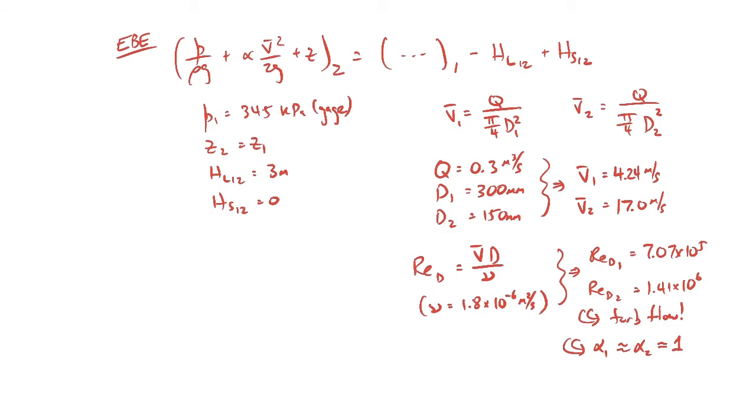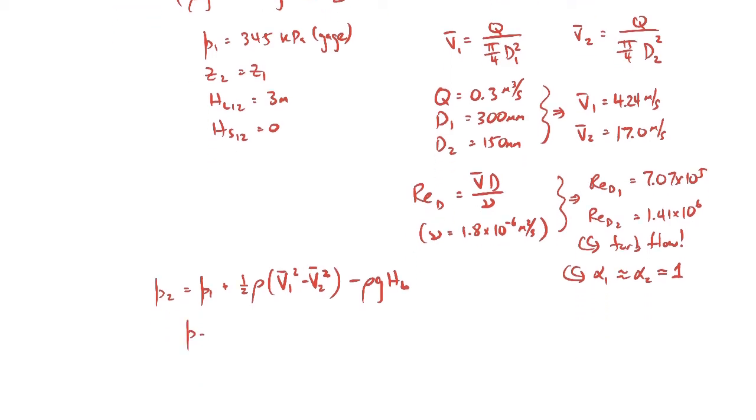So p2 would be p1 plus one-half rho v1 squared minus v2 squared. I use the assumption or the fact that the kinetic energy correction factors are equal to 1, so that's why you don't see the alphas here. And then we have also the head loss term, so we know all the values for these things. We can plug them in and solve for p2.